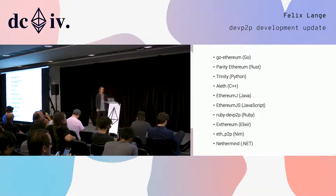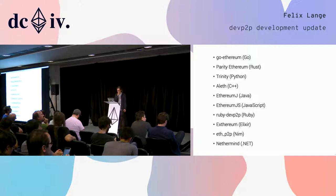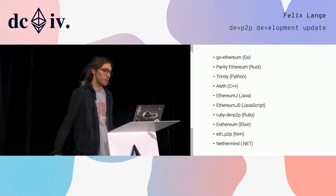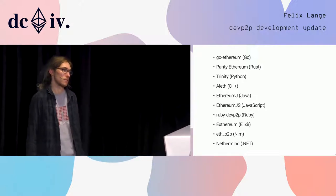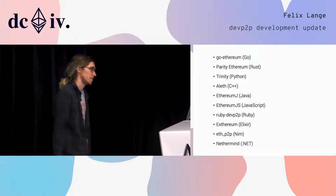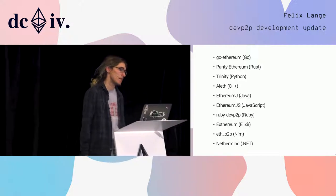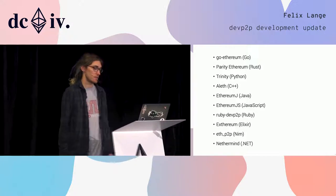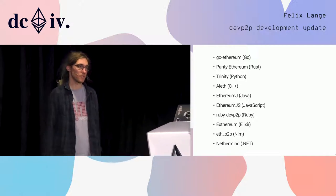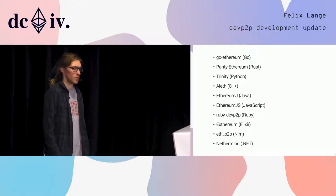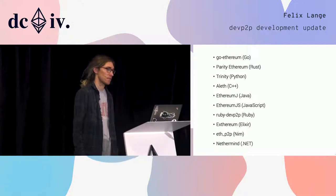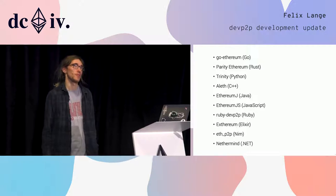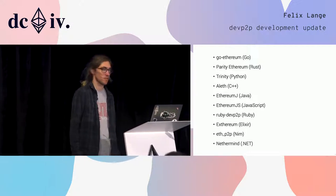There are around 10 implementations of DevP2P right now, as you can see listed here. Most of the implementations are part of some kind of Ethereum blockchain client, but not all — some are incomplete or just a library implementing a certain part. DevP2P isn't just used for the blockchain; it's also used by other projects like the Swarm distributed file system and most of its offshoots, and even the Status messenger app used it for a long time.